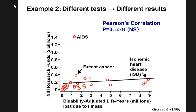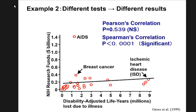Again, two continuous variables. Using Pearson's, the p-value is 0.539 — greater than 0.05 — so that's not significant. NIH is not using our money to save patient lives. It's very significant — shocking, isn't it? The selection of statistical tests could give you totally different results.